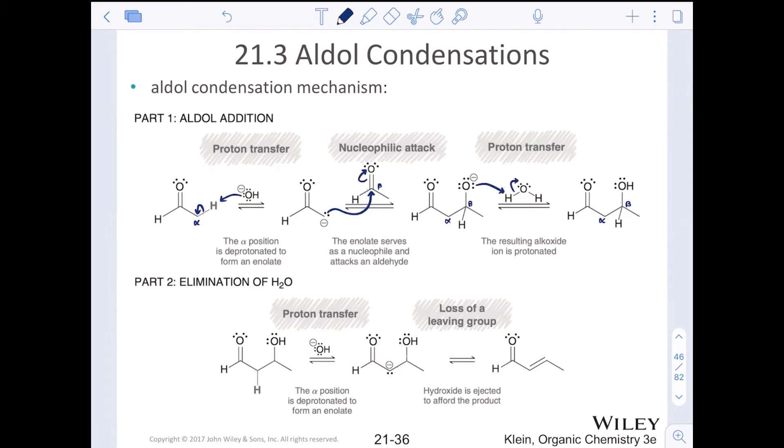Then for the elimination of water, the second equivalent of hydroxide is going to be used to make another enolate, still same pKa. We can still deprotonate that in an equilibrium reaction. Just now in basic conditions, we have a loss of a leaving group. We complete that elimination style reaction where the hydroxide is ejected to create the product, the alpha beta unsaturated aldehyde.